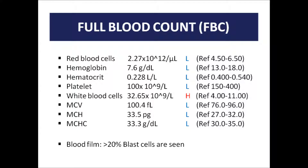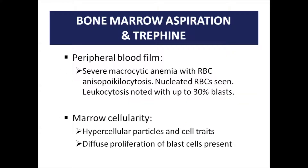In her peripheral blood film, abnormal blood cells are seen on the slide. The hematologist immediately requested a bone marrow aspiration and biopsy. The peripheral blood film and bone marrow show severe microcytic anemia with red blood cell anisocytosis and poikilocytosis. Nucleated red blood cells are also seen. Leukocytosis is noted with up to 30% blasts. The microcytic anemia may be due to folate deficiency.